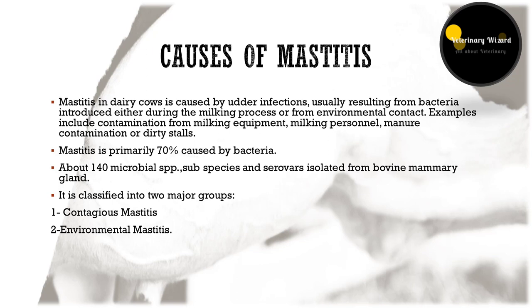There are about one hundred and forty microbial species, sub-species, and serovars isolated from the bovine mammary gland that cause mastitis. There are two major groups: contagious mastitis and environmental mastitis. Contagious mastitis is the cow-associated form where infected cows are the reservoirs for bacteria and spread occurs cow to cow at milking time. Environmental mastitis involves infections acquired from bacteria in the environment of the cow.